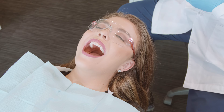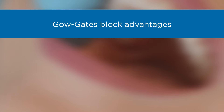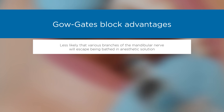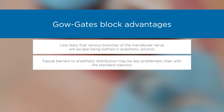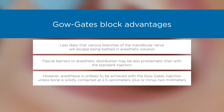Typically, anesthesia occurs within five minutes after injection. When properly performed, the Gow-Gates block offers advantages over the standard inferior alveolar nerve block. Because the anesthetic is deposited high up within the pterygomandibular space, various branches of the mandibular nerve that may provide anomalous innervation are less likely to escape being bathed in anesthetic solution. Facial barriers to anesthetic distribution may also be less problematic. However, anesthesia is unlikely to be achieved unless bone is solidly contacted at 25 millimeters, plus or minus 2 millimeters.